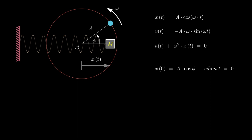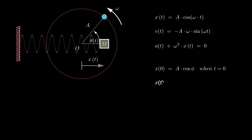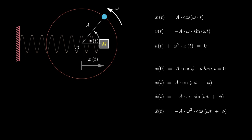Despite the shift in the initial position, the mass continues to move with the same angular frequency. We can therefore reformulate the expression for the displacement of the mass as x(t) = A cos(omega t + phi). Substituting zero for time in this equation yields the previous expression. Taking the first and second derivatives of this displacement with respect to time to determine velocity and acceleration when there is a phase angle phi, we find that even with a phase angle present, the acceleration continues to be directly proportional to the displacement — this is the characteristic of simple harmonic motion.